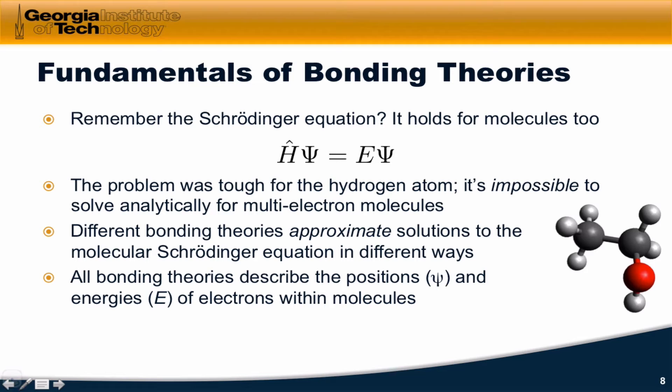In some sense, all bonding theories describe the positions and energies of electrons within molecules. For molecular orbital theory, we actually get out wave functions and energies that are either very close to or exactly eigenfunctions and eigenvalues of the Hamiltonian.